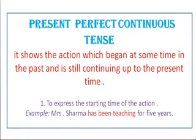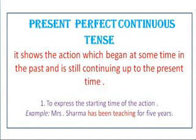Now let us come to the next: present perfect continuous tense. Isme 'has been' ka upyog hota hai — pichle wale mein 'has' tha, woh perfect tha, yahan 'has been' aa gaya. Matlab continuous tense hai, toh '-ing' toh lagega hi. It shows an action which began at some time in the past and is still continuing up to the present. Clue: 'has been' rehta hai aur '-ing' lagta hai. Like: 'Mr. Sharma has been teaching for five years.' Matlab pehle kabhi unhone shuru kiya tha, par abhi bhi chal raha hai — isliye ye present perfect continuous hai.